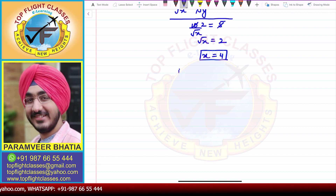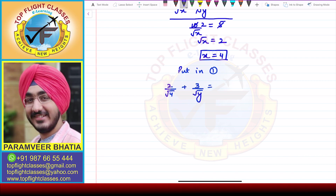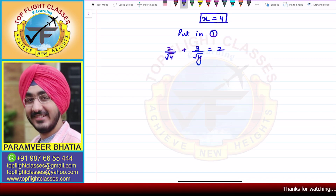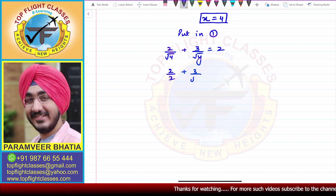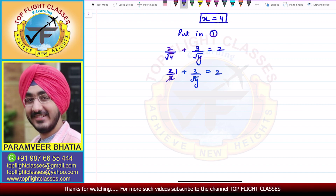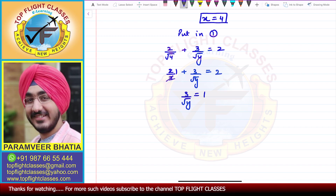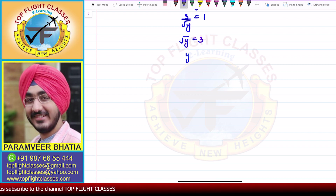With x equal to 4, substituting into the first equation: 2 by root 4 plus 3 by root y equals 2. Since root 4 equals 2, this becomes 2 by 2 plus 3 by root y equals 2, which simplifies to 1 plus 3 by root y equals 2. So 3 by root y equals 1, giving root y equals 3, and squaring both sides, y equals 9. This is the required answer, and this is how you can solve it by two methods.